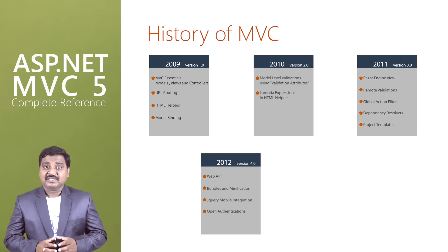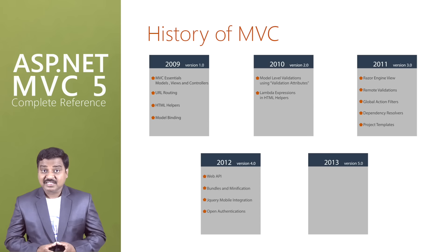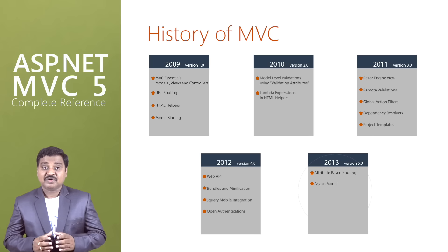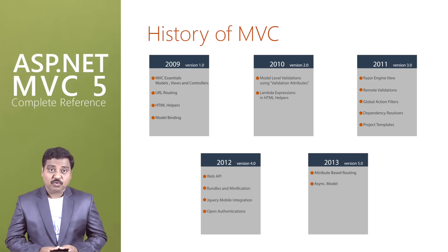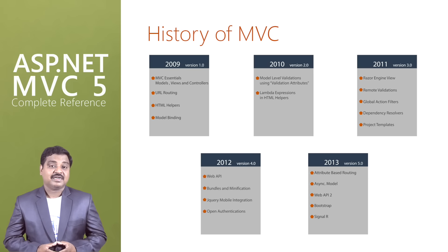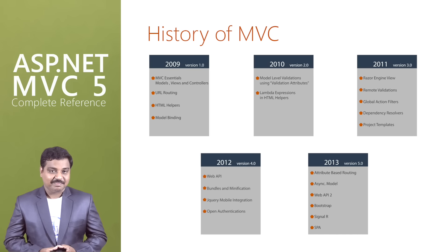And in 2013, ASP.NET MVC 5.0 was released with attribute-based routing, an asynchronous model of programming, Web API with Bootstrap support, SignalR, and SPA, which stands for Single Page Application development.